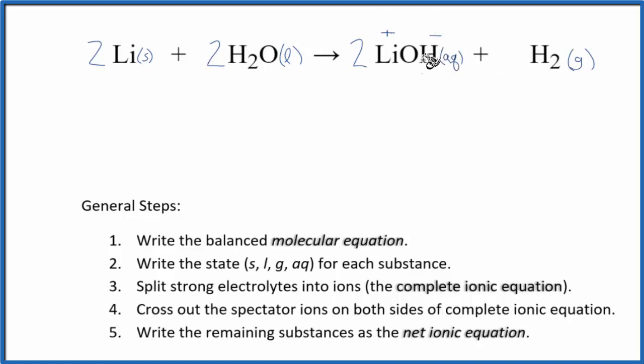So we can split this up when we write out the equation, which will be 2 Li solid plus 2 H2O liquid. And that'll yield 2 Li+ ions, which will be aqueous, plus the 2 hydroxide ions, which will also be aqueous, plus hydrogen gas.